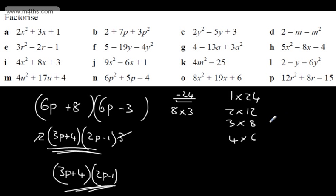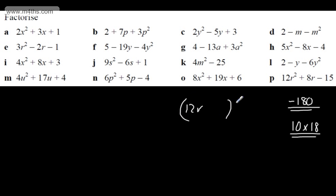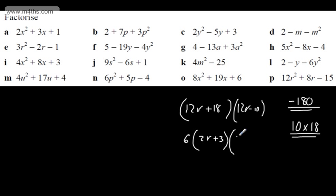Let's look at 12r-squared plus 8r minus 15. We have 12 times minus 15, giving minus 180. I want two numbers that multiply to give minus 180 and add to give 8. Since 10 times 18 is 180, we use plus 18 and minus 10. We put 12r in each bracket: 12r plus 18 and 12r minus 10. Since the end is negative, one must be negative. Taking 6 out of the first bracket gives 2r plus 3; taking 2 out of the second gives 6r minus 5. Cancel, giving (2r+3)(6r−5). Expanding: 12r²−10r+18r−15. ✓